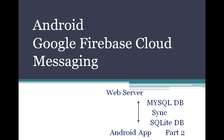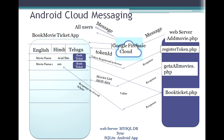Welcome to Android Tutorial. Today we are discussing Google Firebase Cloud Messaging, continuing from the previous session where I explained syncing data between MySQL Database and SQLite Database. So whenever there is a movie released, it sends data to the cloud, the cloud sends it to all users, and whenever a user books a ticket, this will be updated in the server and sends back the updated data.